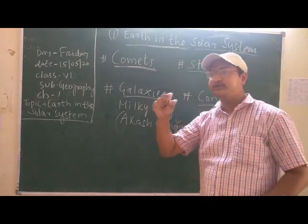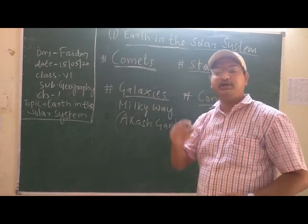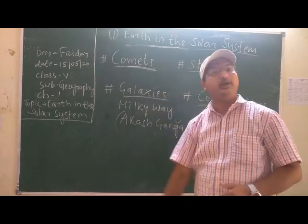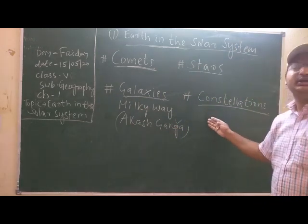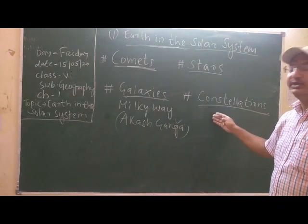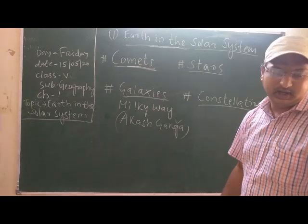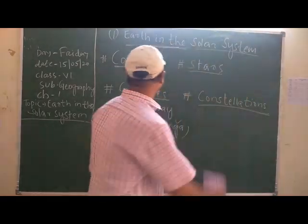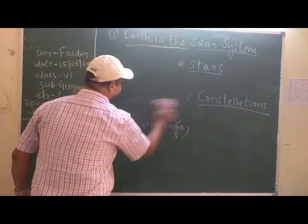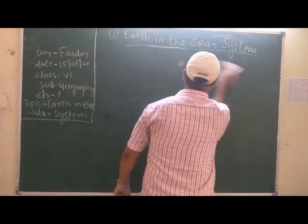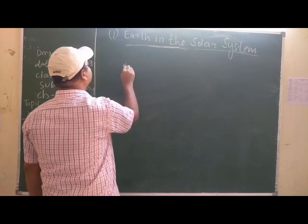Let me draw the diagram of Saptarishi. In Hindu mythology, Saptarishi means seven rishis — 'sapta' means seven and 'rishi' means sages. If stars form a shape or particular picture in the galaxy or in the night sky, that is called a constellation, and this one is named Saptarishi.